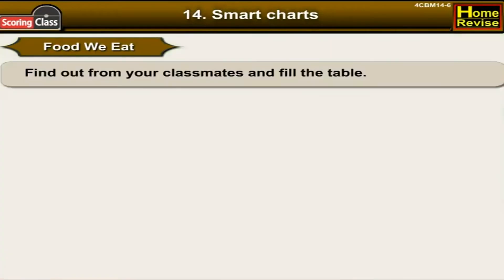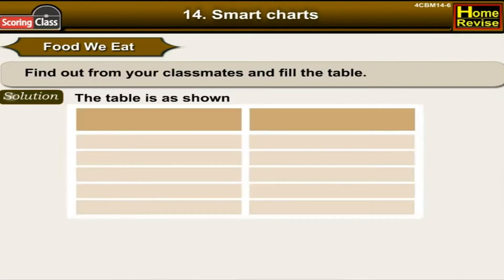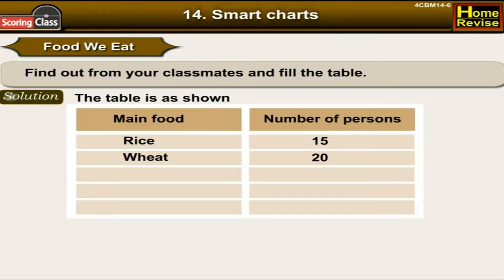Find out from your classmates and fill in the table. The table shows the main food and number of persons. Rice is eaten by 15 people, wheat by 20, maize by 10, barley by 5, and ragi by 5.